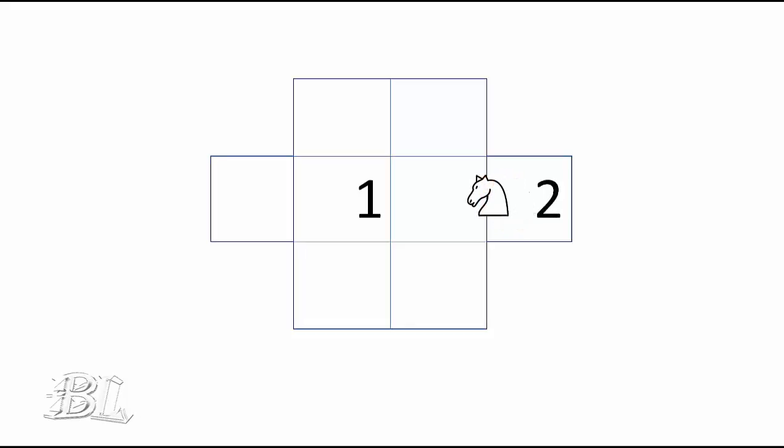Then, put knight on 2 and move it on possible box, that place is for 3.